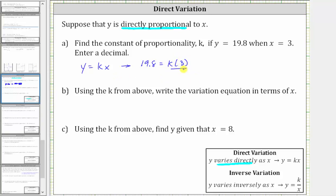To solve for k, we divide both sides by 3. Simplifying on the right side, we just get k, which means k is equal to 19.8 divided by 3, which is 6.6, which means 6.6 is the constant of proportionality.